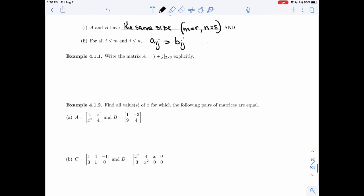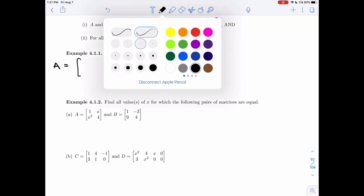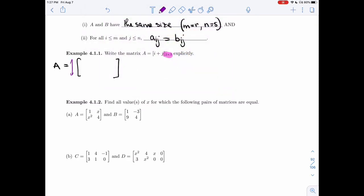Let's try to play with these definitions a bit more. Let's say I want to figure out what I mean when I write this. What does A equal i plus j, 2 by 3 mean? So let's look at the first part. 2 by 3, that's the size of the matrix, so it's telling me that I have two rows, three columns. So here, two rows, that's the first number. Number of columns is the second.